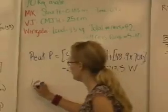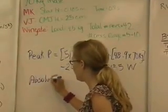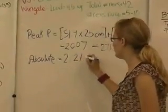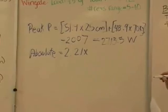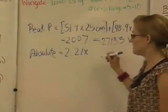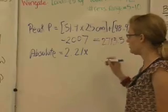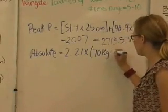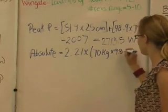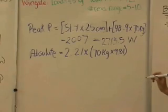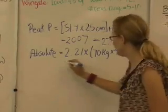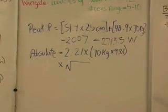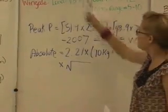For absolute mean power, we have 2.21 times the force, and so the force, again, is the mass times the acceleration due to gravity, so we're going to take 70 kilograms times 9.81, and that is the force in newtons, and then we're going to multiply by the vertical jump in meters, and so it was 25 centimeters, and so